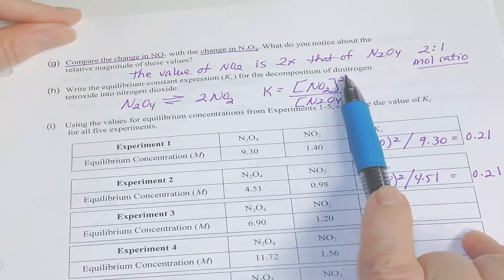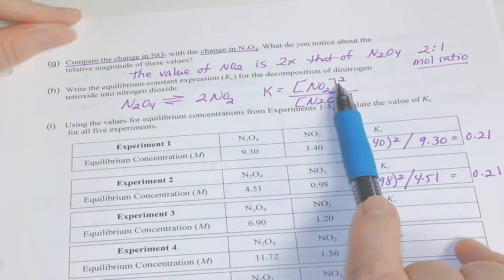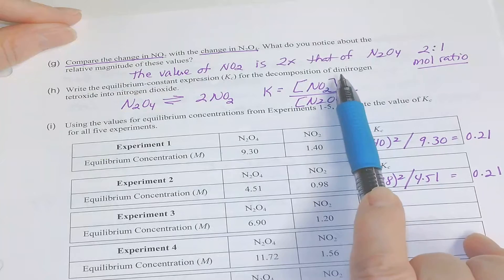Again, when you write the equilibrium expression of that, that becomes a square effect. Raise the concentration to the power of the balanced equation.